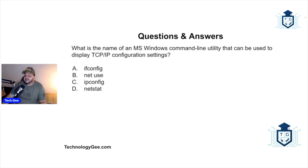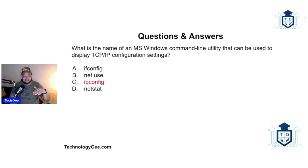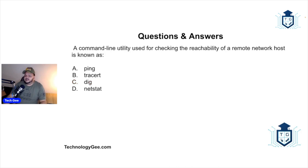Next question: what is the name of a Microsoft Windows command line utility used to display TCP/IP configuration settings — ifconfig, net use, ipconfig, or netstat? If you're on a Windows-based system and you want to look at TCP/IP settings, basically get the IP addresses and all that stuff, the correct answer is ipconfig. On a Windows OS you type ipconfig to get access to IP addresses, MAC addresses, and a whole bunch of other info.